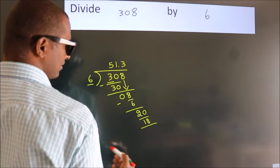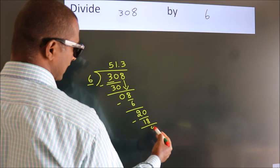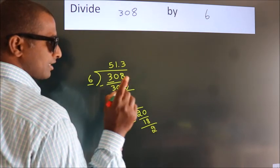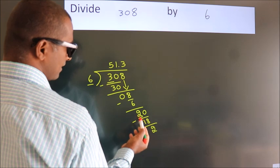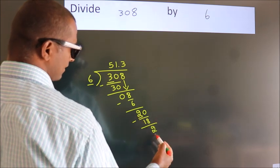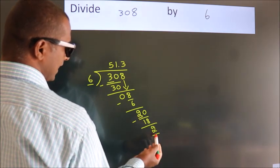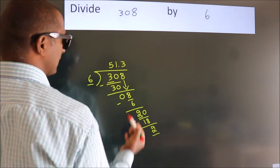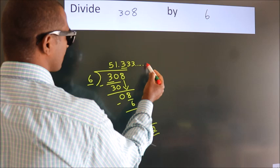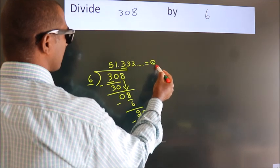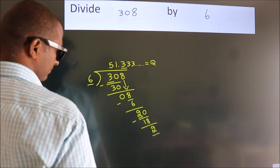Now we subtract, we get 2. Now you observe, we had 2 here and we got 2 again. That means this number keeps on repeating. So this is our quotient.